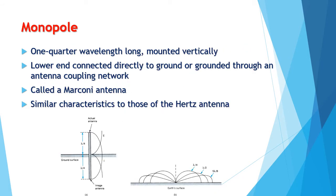Next, we have the monopole. A monopole is one-quarter wavelength long, mounted vertically, with the lower end connected directly to ground or grounded through an antenna coupling network. This is also called a Marconi antenna. The characteristics of a Marconi antenna are similar to those of the Hertz antenna because of the ground-reflected waves. This has the disadvantage of being located close to the ground.